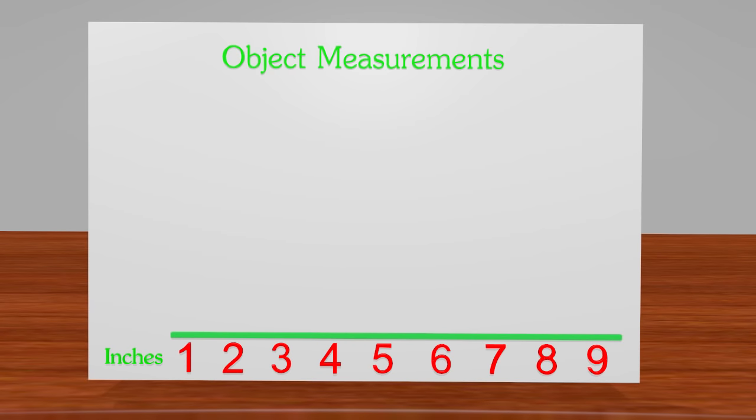Next thing we need when doing line plots is a straight line. All of our information we collected was measured in inches, so here to the side we will put inches. Okay, here we have the numbers from 1 to 9 listed, so we can show our data.